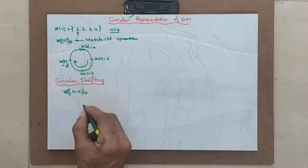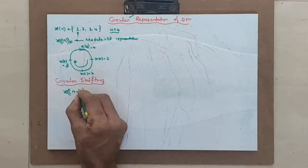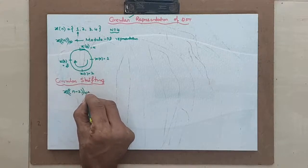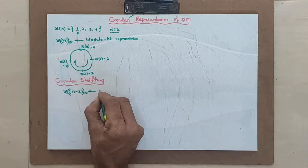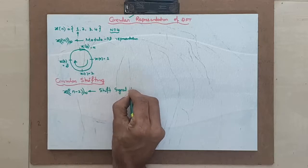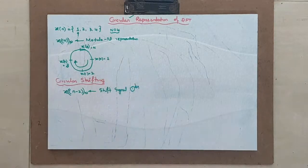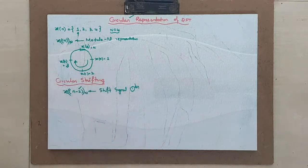What I am trying to do is, I just represent this and shift it circularly by 2. This is nothing but the meaning of x n minus 2. Means, shift signal circularly or around the circle by how many units? 2 units. That's all.